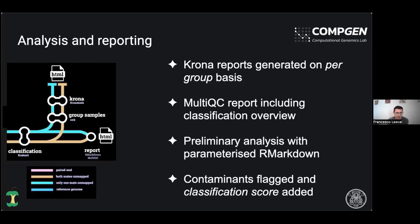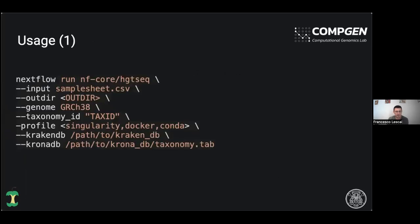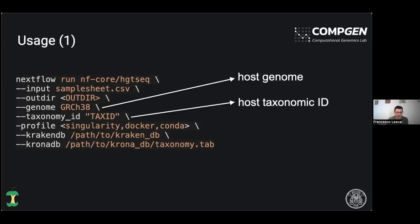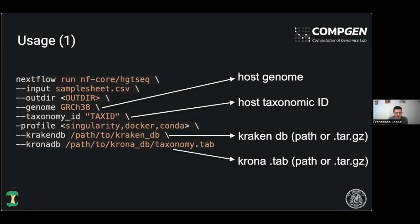We have further classified the contaminants depending on their potential role in human diseases, because we are particularly interested in analyzing this phenomenon in humans. A typical command line to start the pipeline uses the input sample sheet as a comma-separated value file, as in most NFCore pipelines. We use iGenomes for the host genome indication, pass the host taxonomic ID to filter results in the R Markdown report, and specify paths to both the Kraken and Krona databases.